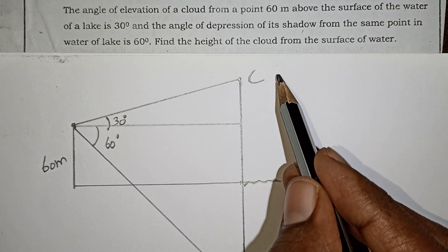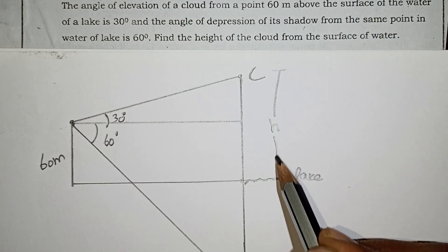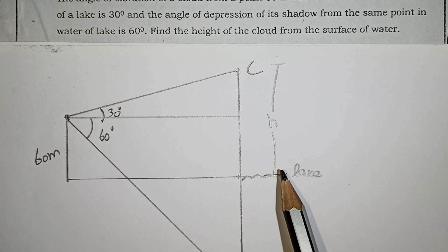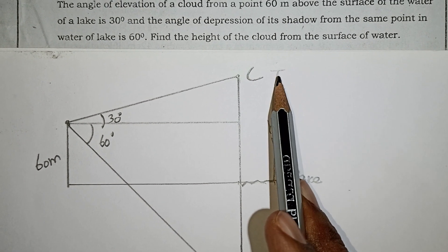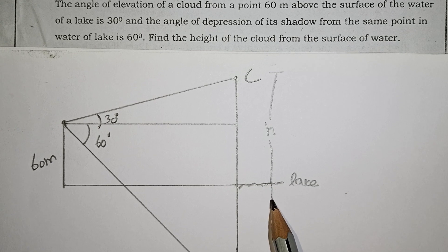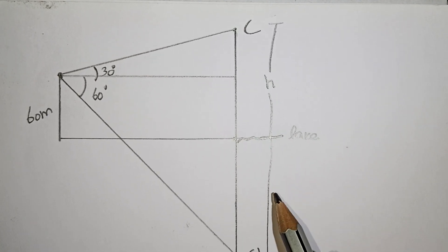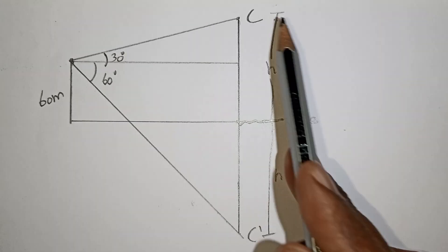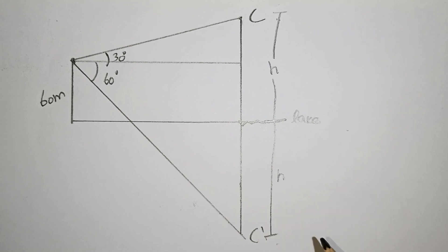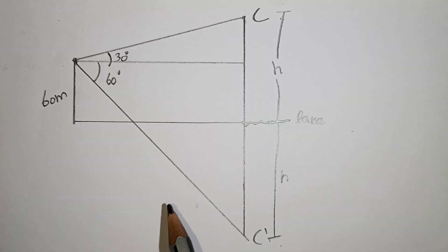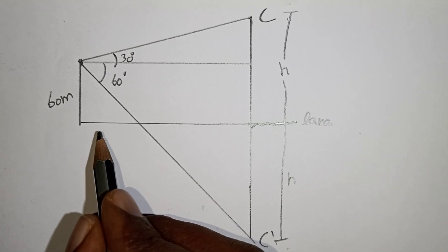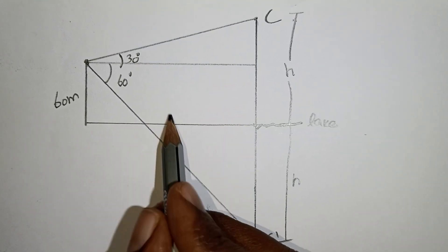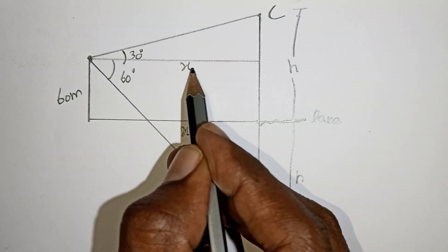Suppose the cloud is h meters above the lake. The two triangles share a common horizontal length. We label the horizontal distance as x.